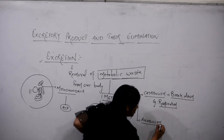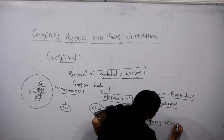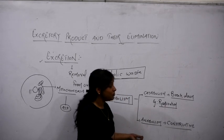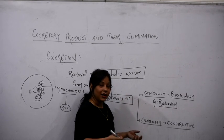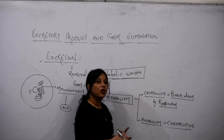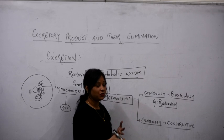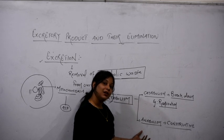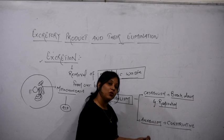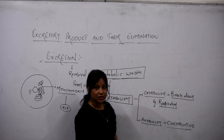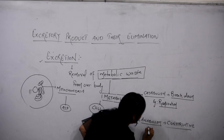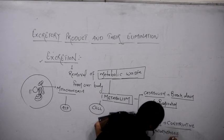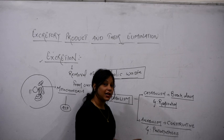If we talk about anabolism, it is the constructive type of reaction. Constructive reaction means some substance is being formed — like small amino acids forming proteins, or carbohydrates being formed, or fats being formed. In plants, using carbon dioxide and water in the presence of sunlight and chlorophyll, carbohydrates are formed. So it is the constructive type of reaction.